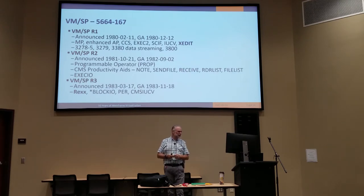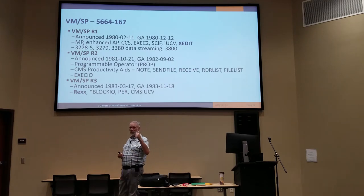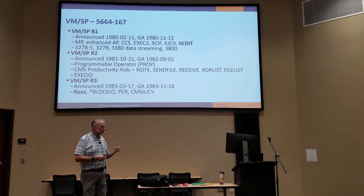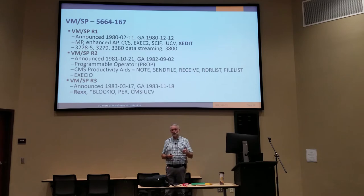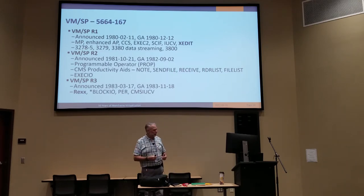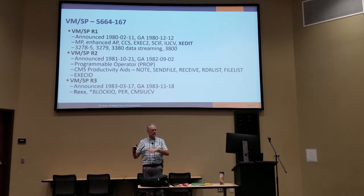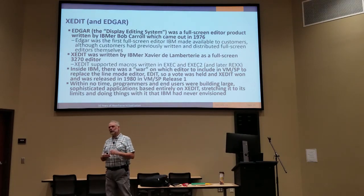Release 3 came along in 1983 with GA. It added REXX — the most important thing IBM ever did, up until Pipelines. REXX had a fantastic set of I/O capabilities. There was also CURA for event recording and monitoring system, and CMS was improved — before it was just a CP function, so this made it a lot easier to use.